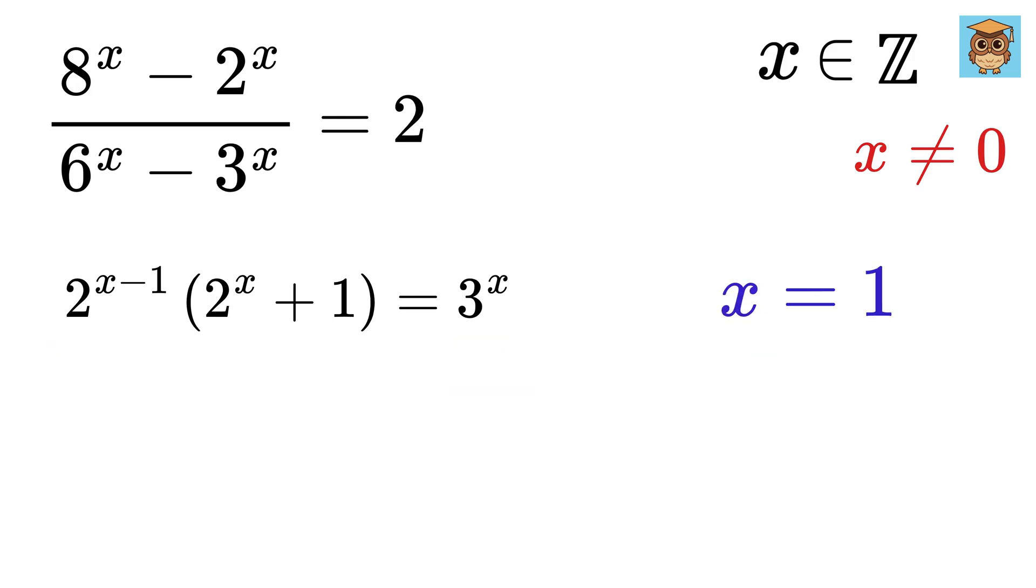If x equals 1, then 2 to the 1 minus 1 equals 2 to the 0 or 1, then 2 to the x plus 1 will be 2 plus 1 or 3. And right side will be 3 to the 1 or 3. Amazing! This means x equals 1 is a solution to this problem.